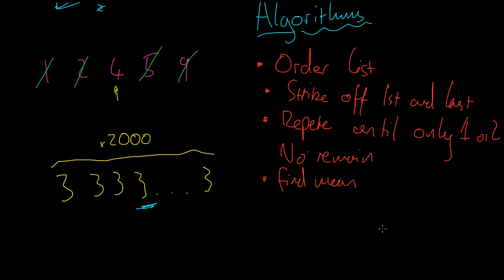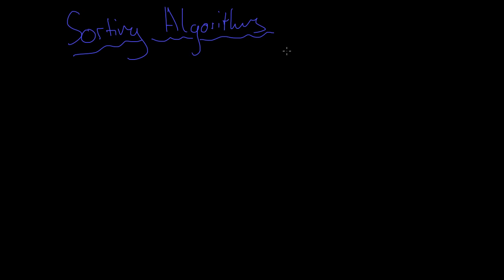The first algorithm we're going to look at is something quite simple but very structured. We're going to look at sorting algorithms. If you're a computer and you have a set of data, that data is only useful if you can quickly find the information you want — like a phone book in alphabetical order. There are algorithms designed to add, subtract, delete, or order numbers. Specifically, we'll be ordering numerical lists in increasing or decreasing order.